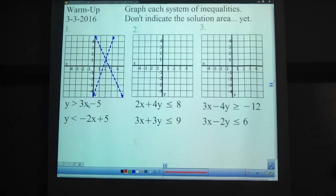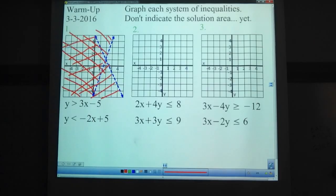Now we've got greater than 3x minus 5, so you should be shading in... Wait, that's the wrong one. There we go. You should be shading on this right here. And less than 2x plus 5, you should have this here shaded. If you aren't sure how to shade it, this is not really the video to watch for that. This is kind of delving into deeper systems of inequalities.